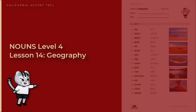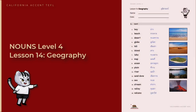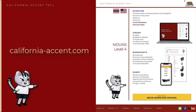This video covers Nouns Level 4, Lesson 14, Geography. You can get the worksheet for this lesson on the California Accent TEFL website, California-Accent.com. Click 600 Nouns, then go to Nouns Level 4.